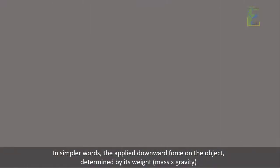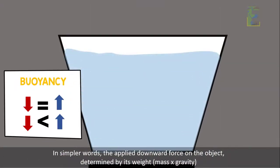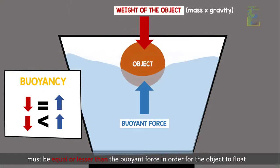In simpler words, the applied downward force on the object, determined by its weight, mass times gravity, must be equal or lesser than the buoyant force in order for the object to float.